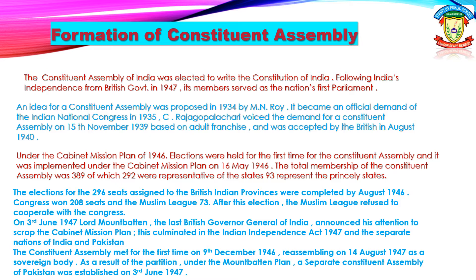It was accepted under the Cabinet Mission Plan of 1946. Elections were held for the first time for the Constituent Assembly, and it was implemented under the Cabinet Mission Plan on 16 May 1946. The total membership of the Constituent Assembly was 389, of which 292 were representatives of the provinces and 93 represented the Princely states.